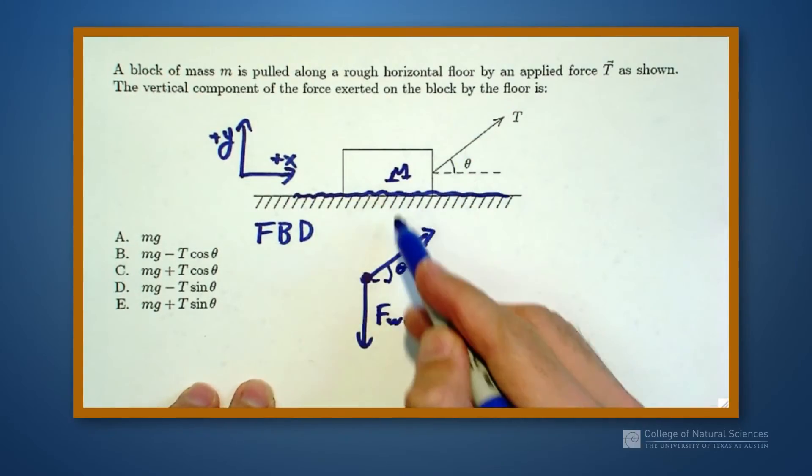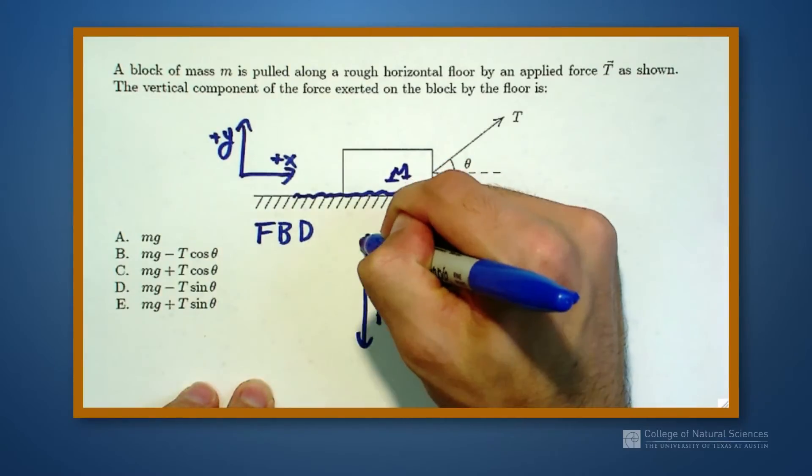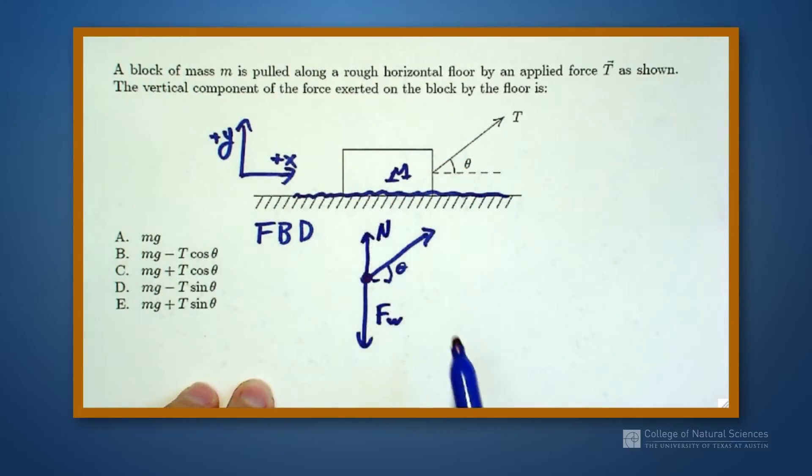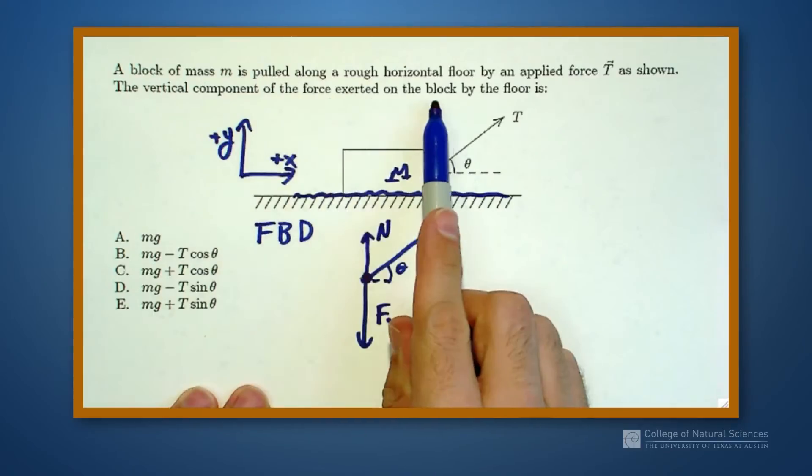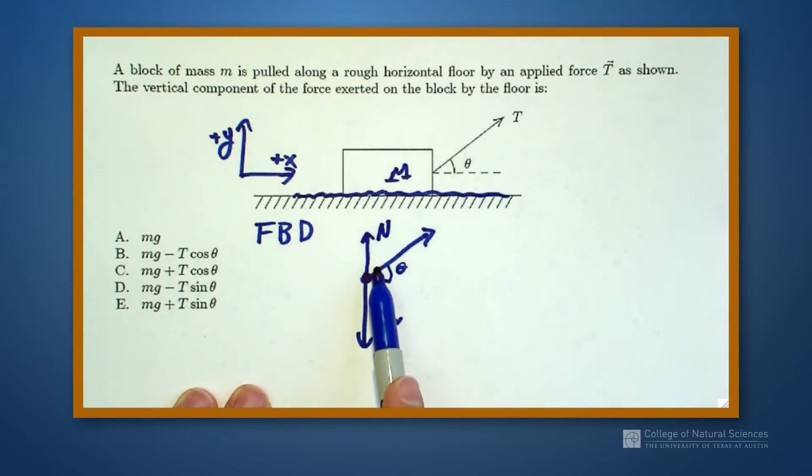We know that the floor keeps the block from being pulled down. So there's got to be an upward force exerted on the block by the floor. So the floor pushes up on the block, keeps it from falling through. That's why books don't fall through desks, the desk pushes up on the floor.